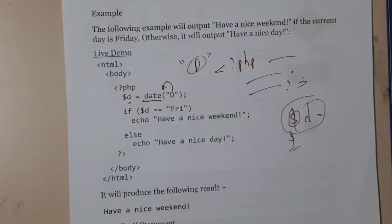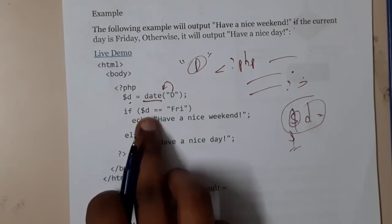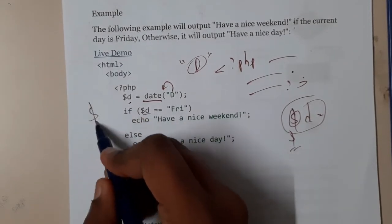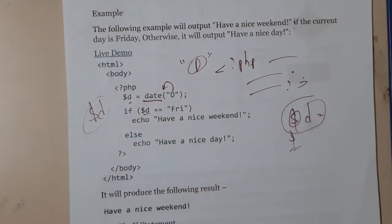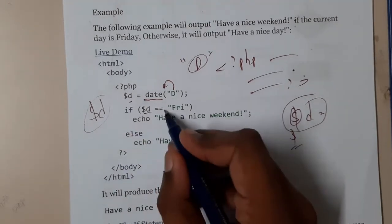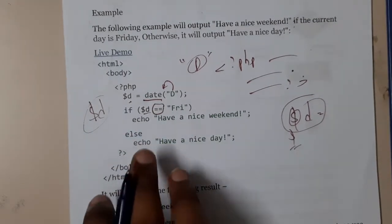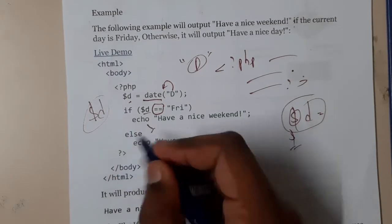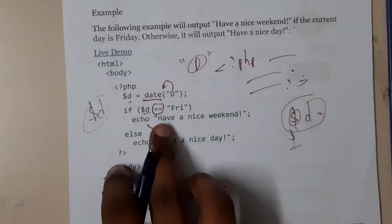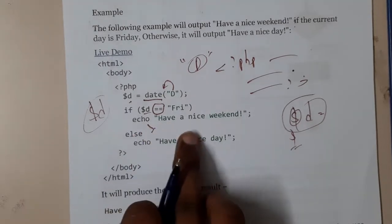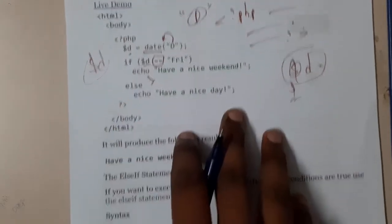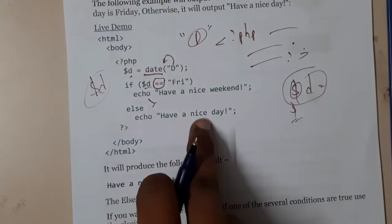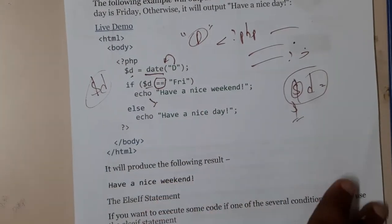So $d is the variable — wherever you write a variable, the dollar sign is mandatory. We check if $d equals 'Fri' using the double equal-to operator. Then echo is used to print — you can also use print, but echo is more common in PHP. So: echo 'Have a nice day', else echo 'Have a nice weekend'. If you execute this, you'll get 'Have a nice day'.